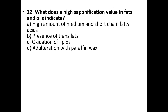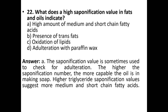Question 22: What does a high saponification value in fats and oils indicate? A. High amount of medium and short chain fatty acids, B. Presence of trans fats, C. Oxidation of lipids, D. Adulteration with paraffin wax. The answer is option A: High amount of medium and short chain fatty acids. The saponification value is sometimes used to check for adulteration. The higher the saponification number, the more capable the oil is in making soap, and higher triglyceride saponification values suggest more medium and short chain fatty acids.